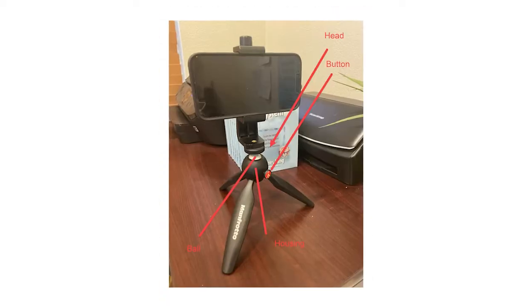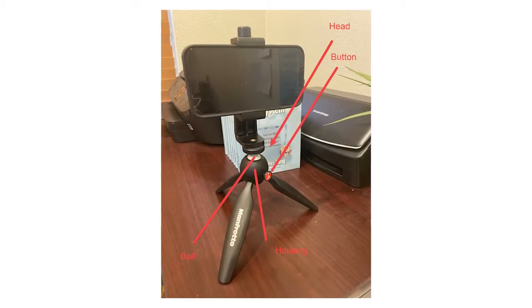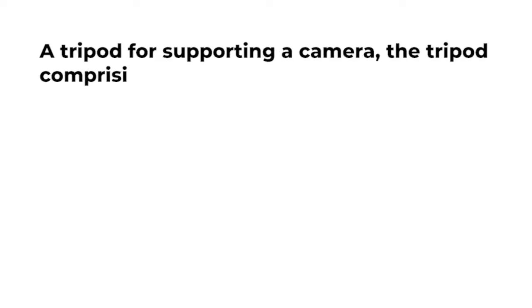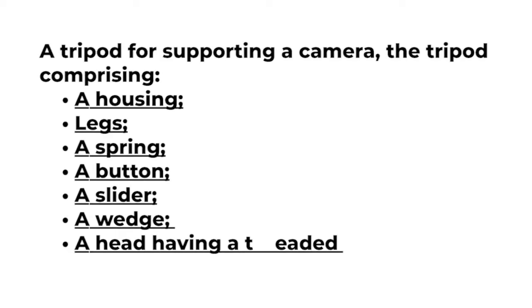Also, a tripod has to support a camera and has legs. Put these parts into the body of the claim. Here is what our tripod claim should look like so far. The underlined terms are what I added in this step.